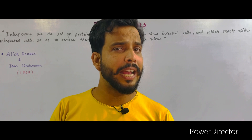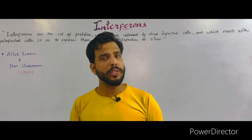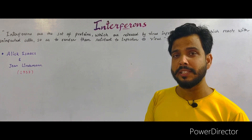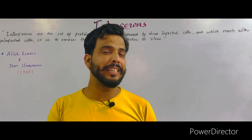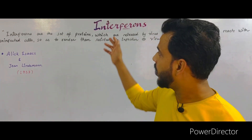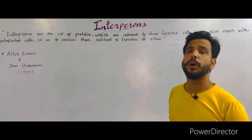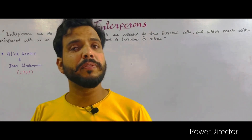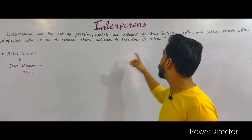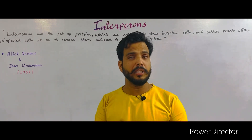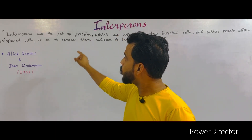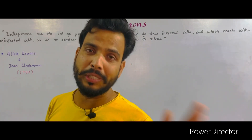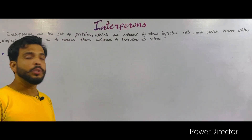First of all, what is interferon? Interferons are actually a signaling protein which is produced inside cells that have been attacked by a virus. The interferons alert the adjacent cells and provide them resistance to infection by the virus. So, interferons are the set of signaling proteins which are released by the virus-infected cell and which react with the uninfected, adjacent cells so as to render them — that is, to provide them — resistant to viral infection.